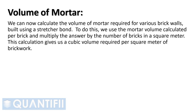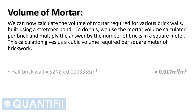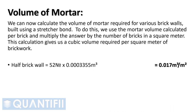We can now calculate the volume of mortar required for various brick walls built using a stretcher bond. To do this, we use the mortar volume calculated per brick and multiply the answer by the number of bricks in a square meter. This calculation gives us a cubic volume required per square meter of brickwork. Therefore, a half brick wall of 52 bricks, multiplied by the mortar volume per brick, is equal to 0.017 meters cube per meter square.